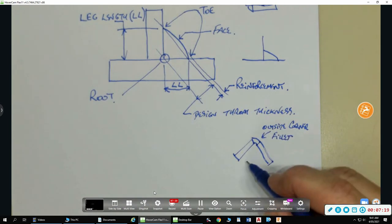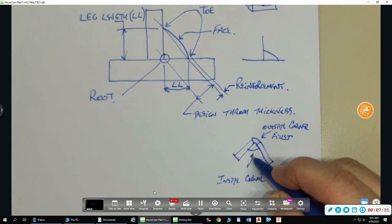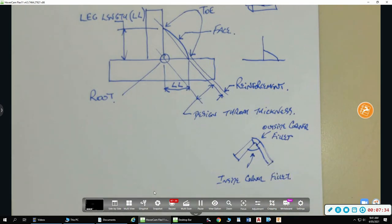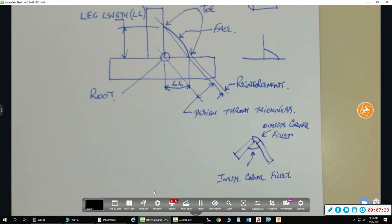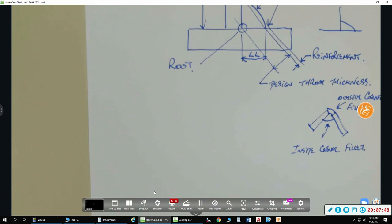Here, we have, still have a fillet weld there. We call this an inside corner fillet. Here, we still have a fillet weld there. There's probably, there might be a variation of that, but that's pretty much. So, I'd sum it up, I'd say.